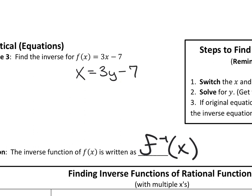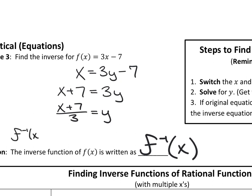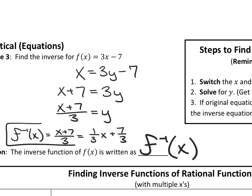Next, solve for y using inverse operations and isolating variables. I'm going to add 7 to both sides to get rid of the minus 7, then divide by 3 to get y by itself. So I have x plus 7 divided by 3 equals y. The final answer written as f inverse of x equals x plus 7 over 3, or equivalently one-third x plus 7 over 3. Those are the same thing — be prepared to see both forms. They're interchangeable.